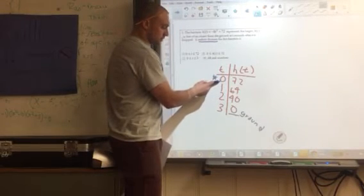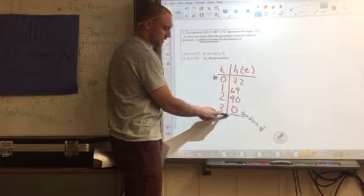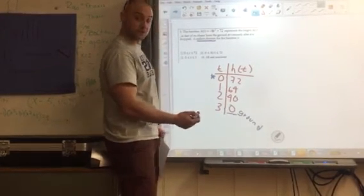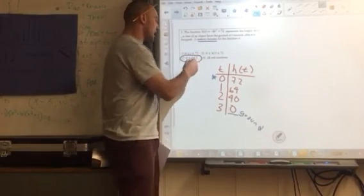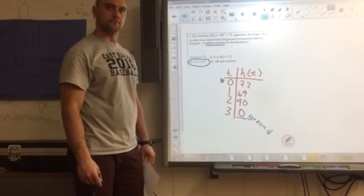So it started at zero seconds at 72 feet is decreasing, decreasing, decreasing. At the third second, it hits the ground. So that means the most realistic domain would be when the time is from zero to three seconds.